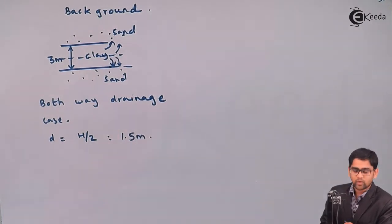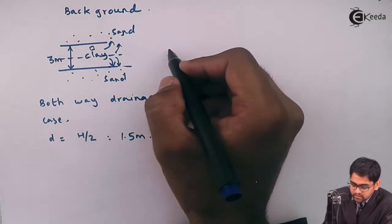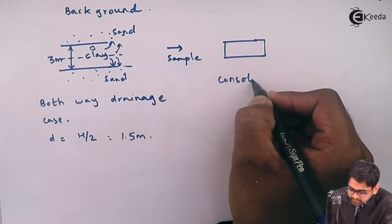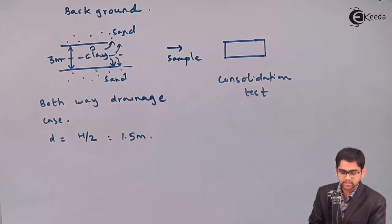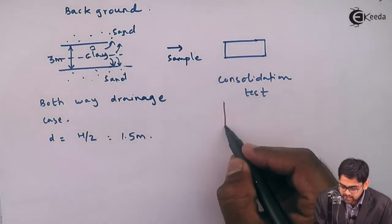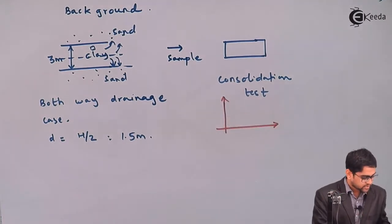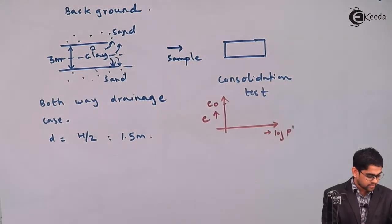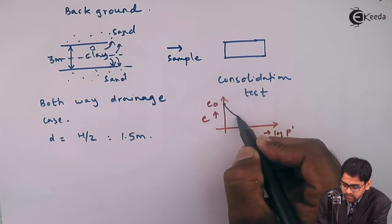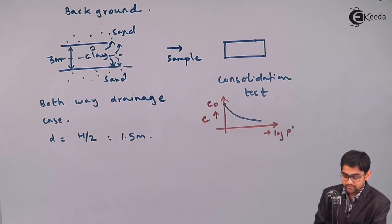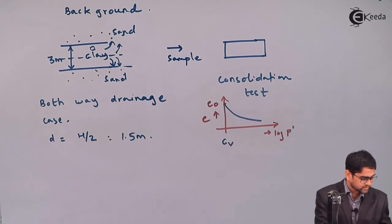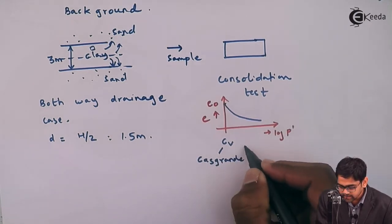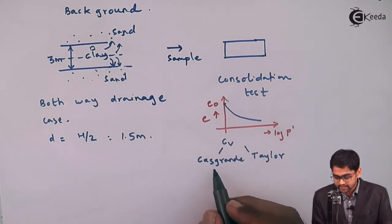We take a small clay sample from the field, transport it to the lab, and perform a consolidation test. From the consolidation test, you place loads, calculate the initial void ratio E-naught, and plot a curve of void ratio E versus log P (effective stress). From this curve, we calculate the coefficient of consolidation C-V by two methods: Taylor's square root of time fitting method and the Casagrande log of time fitting method.